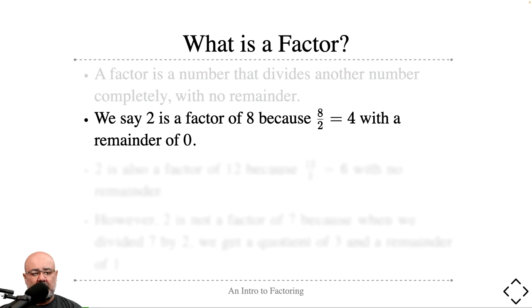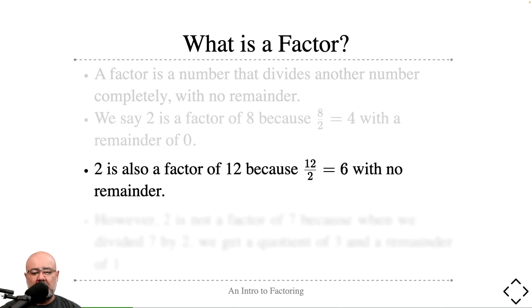So what does this look like? We say 2 is a factor of 8 because if we divide 8 by 2, we get 4 evenly with nothing left over. There's no remainder of 1 or 2 or something else. Similarly, we can say that 2 is a factor of 12 because if we divide 12 by 2, it goes in evenly and gives us 6 as the answer, again with no remainder.